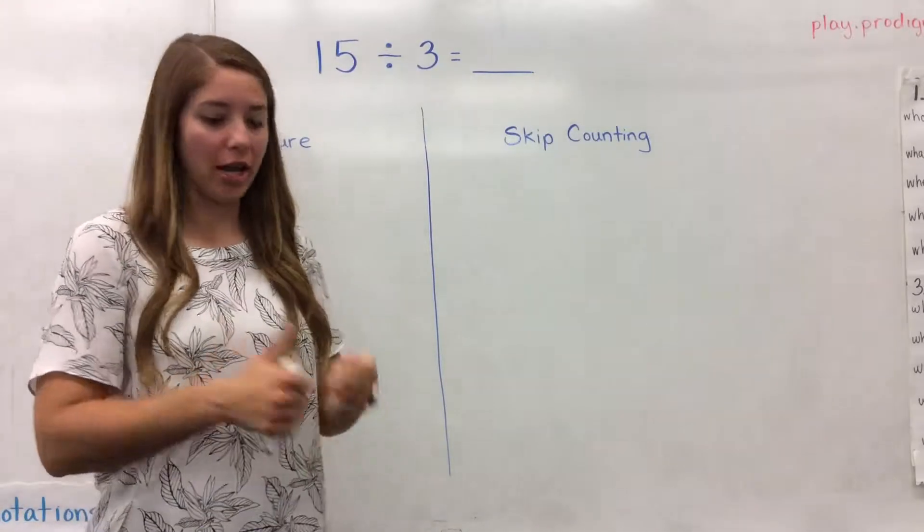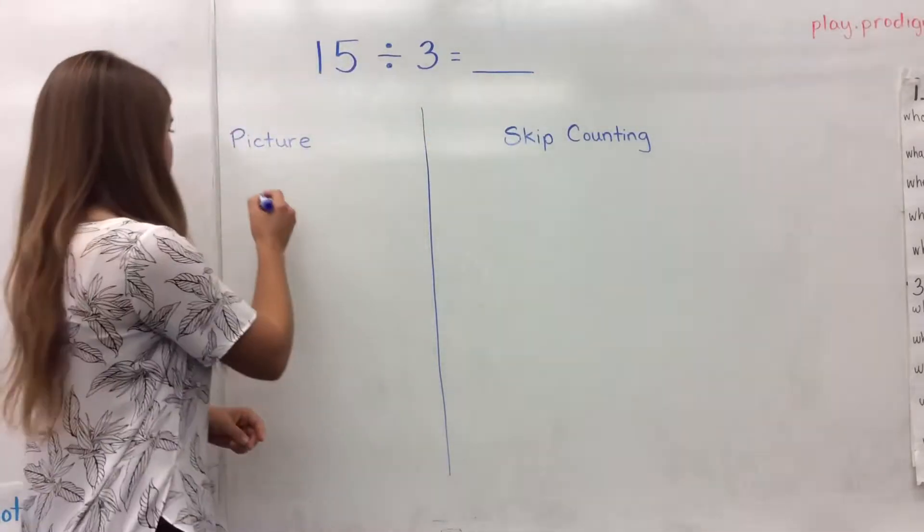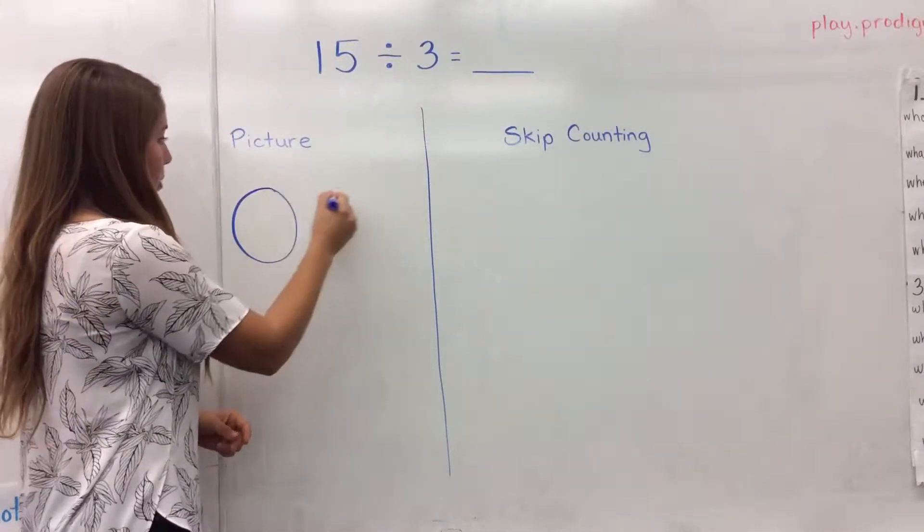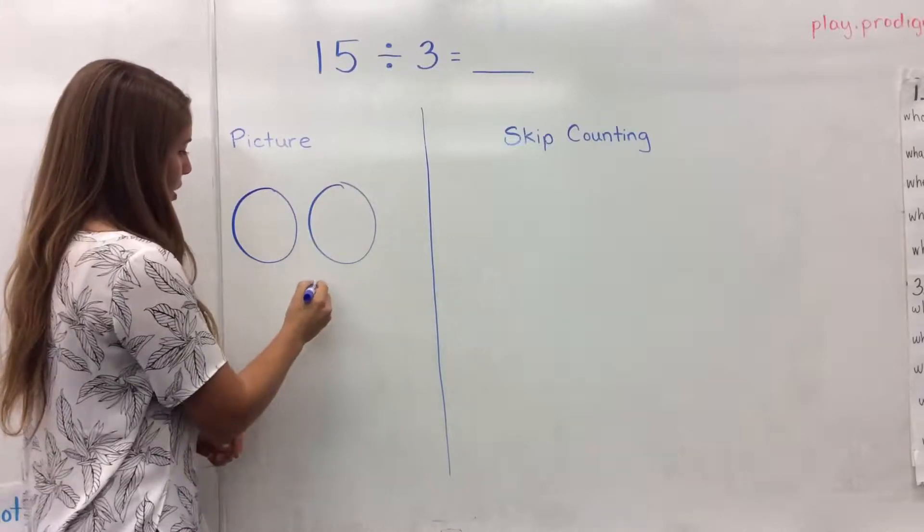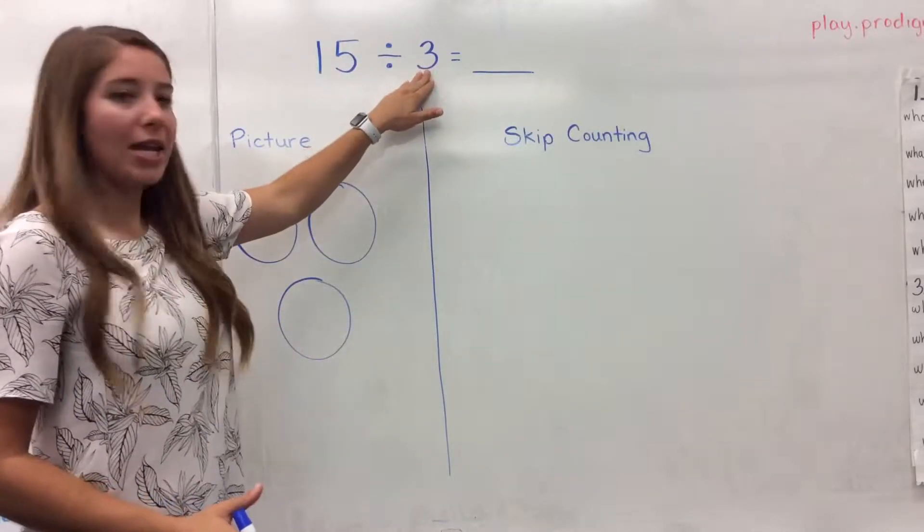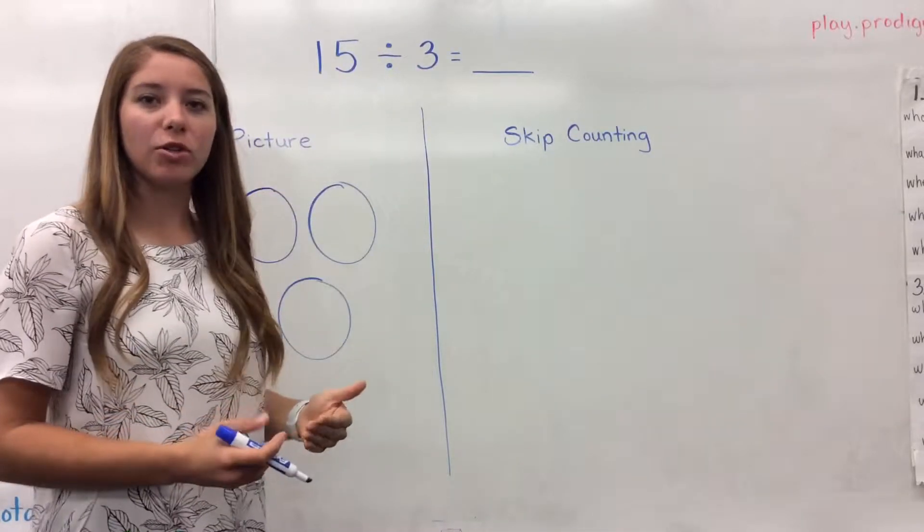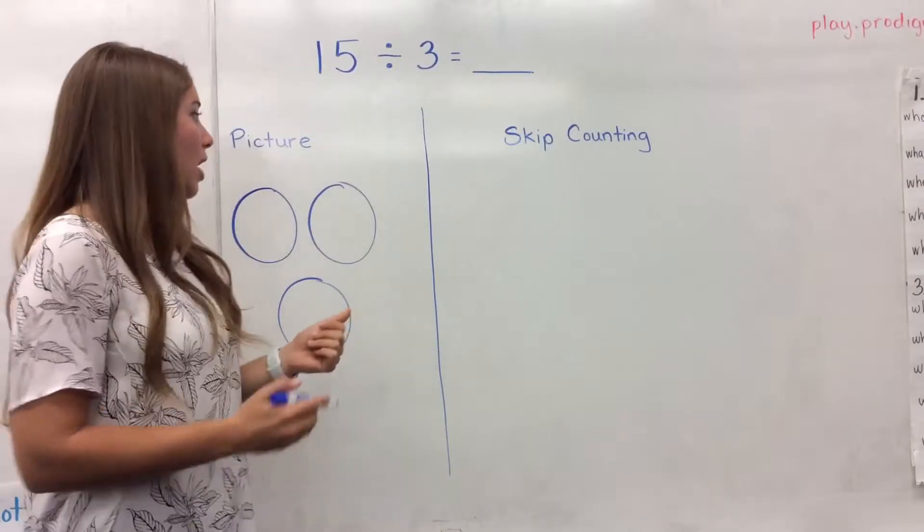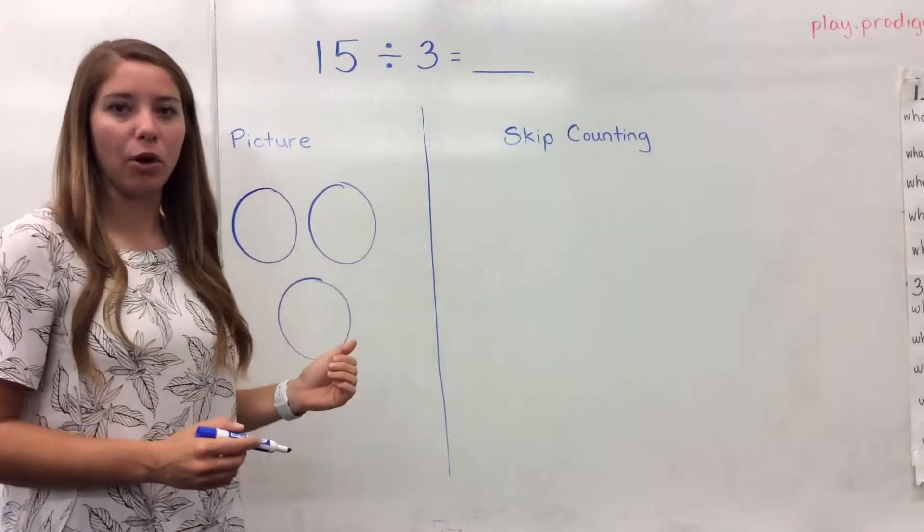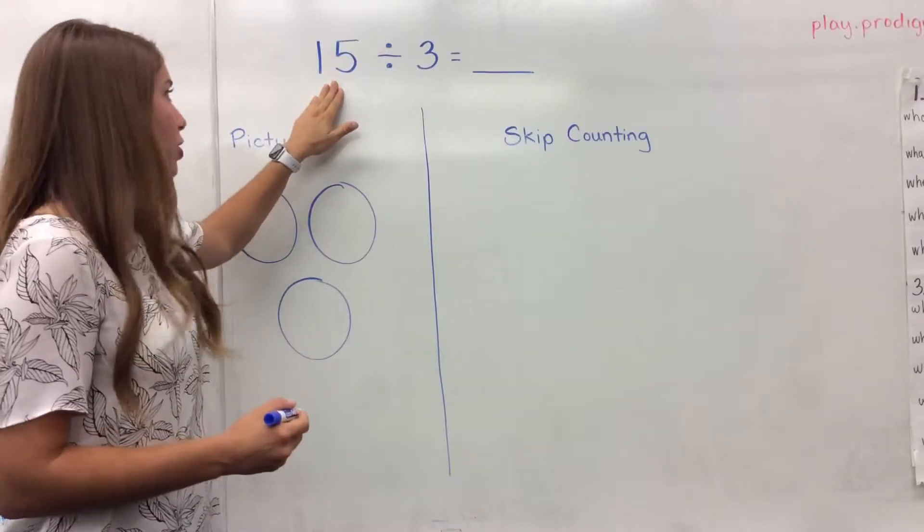So the picture is the easiest way to start, and to do that picture, all I'm going to do is draw three equal groups, again, using just circles like we modeled in the multiplication video that you can also check out on this channel. There's my three equal groups. Now I'm going to divide this 15 into those three equal groups, and the way that I'm going to do this is by passing them out so that each group remains equal the whole time. So I'm going to count up and pass out 15 little objects here.